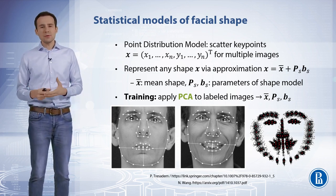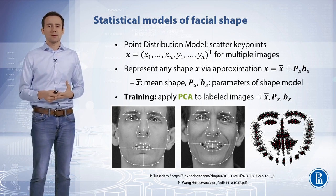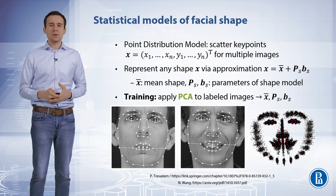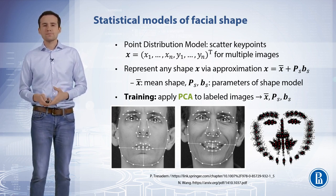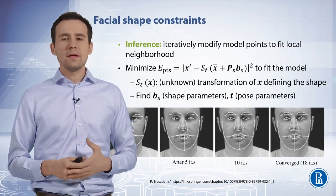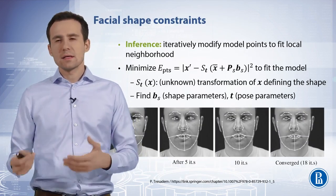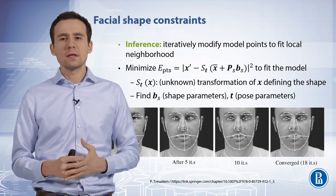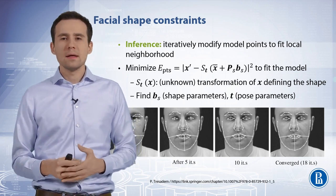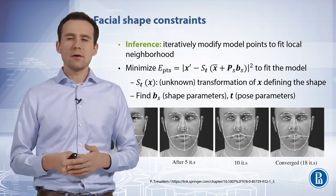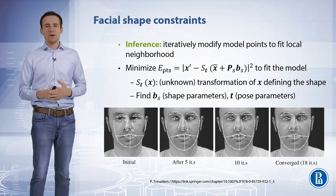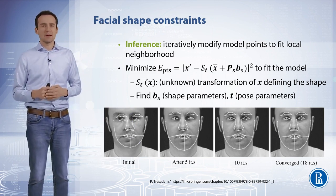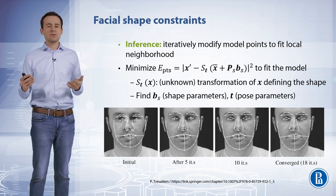In ASM, a point distribution model captures the shape variance and gradient distributions for a set of facial keypoints and describes the local appearance. The shape of the face is defined as that property of the configuration of points which is kept unchanged or invariant under some global transformation. In other words, if s sub t of x applies a transformation defined by parameters t to the points x, then the configurations x and s sub t of x are considered to have the same shape.